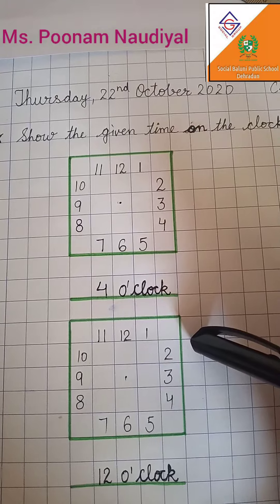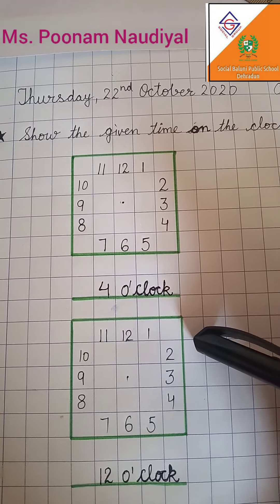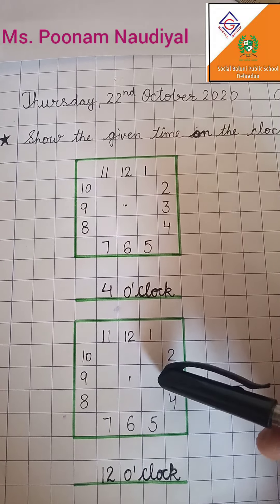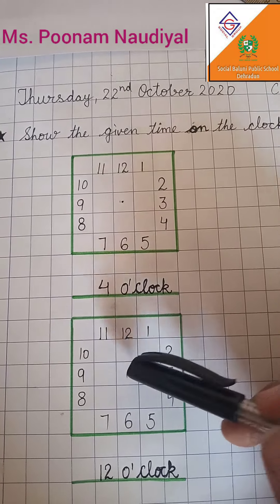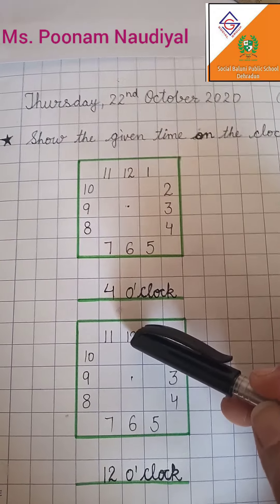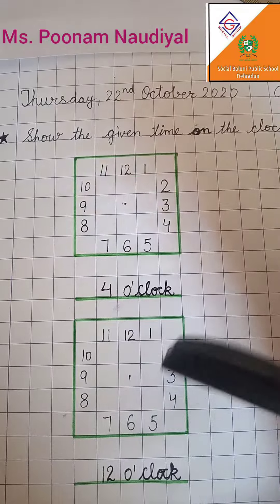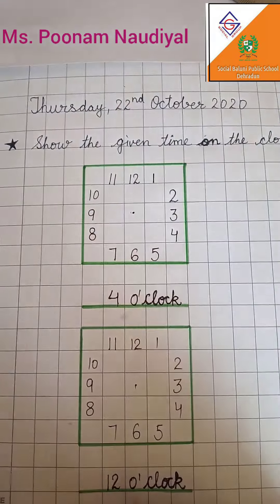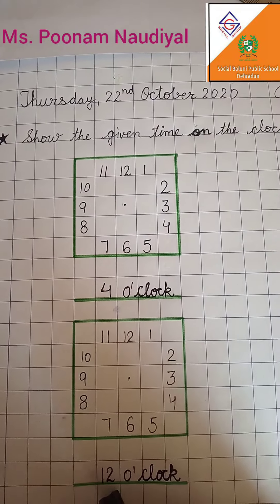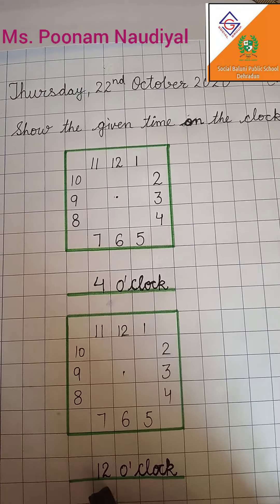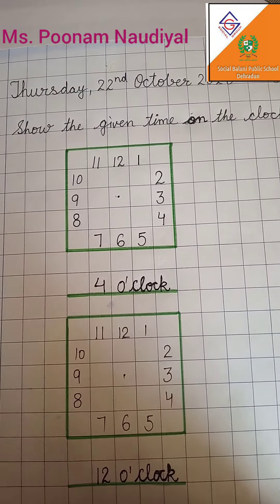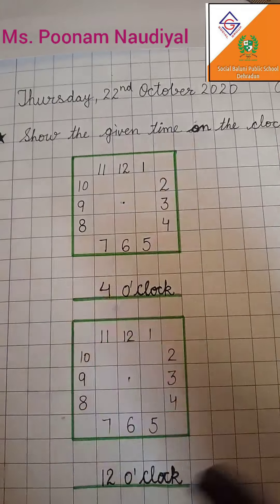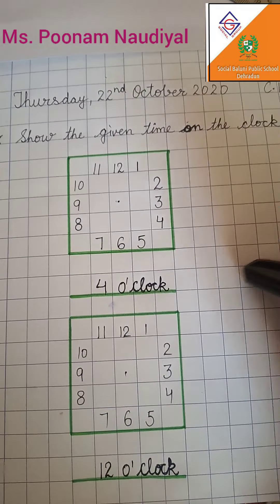So what will you draw? Where will the long hand be? The long hand will be on 12, and where will the short hand be? The short hand will be on 12. So both the hands will be on 12.